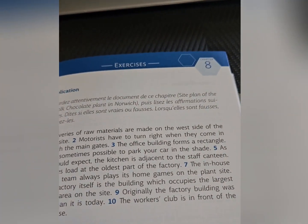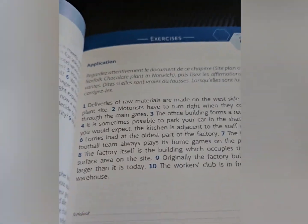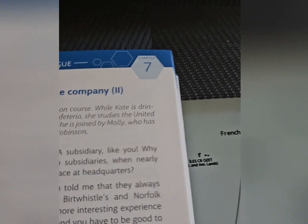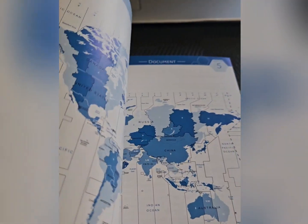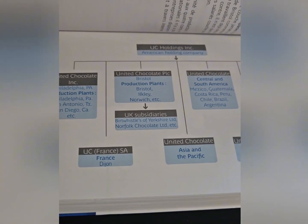So basically, the layout for this one is also different. You get a translation for that. The average Asimil book has a review lesson at every seventh lesson, but this one doesn't — it's just a continuation of the previous dialogue. You do have some really decent content, and you also have some graphs here. For example, United Chocolate Incorporated — if I remember correctly, that was the main company in this book.